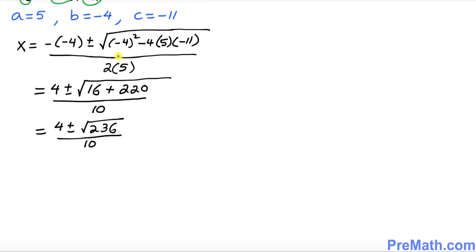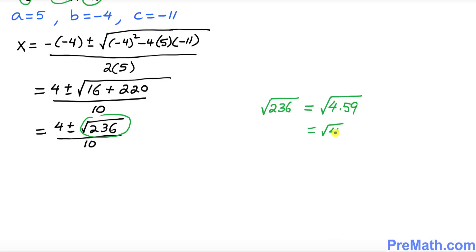Now let's look at that radical. The square root of 236 can be factored as the square root of 4 times 59. We can split this as the square root of 4 times the square root of 59, and since the square root of 4 is 2, this becomes 2 times the square root of 59.